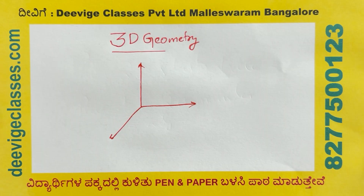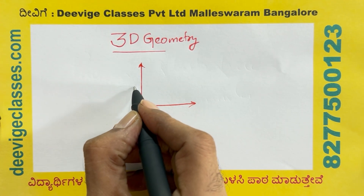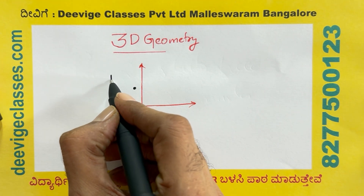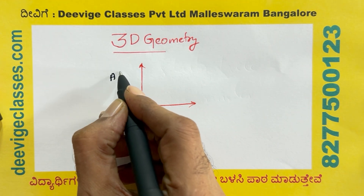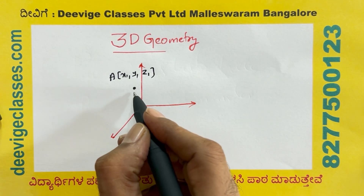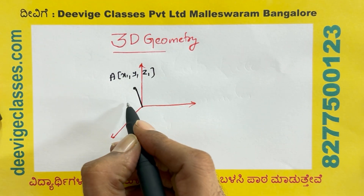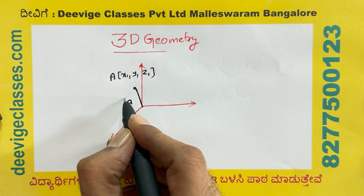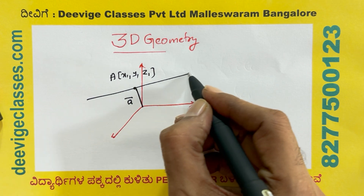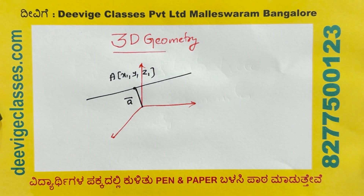Equation of a line passing through a given point parallel to a given vector. Consider any point A of coordinates x1, y1, z1 whose position vector is OA vector, which is equal to vector A. Let L be the line passing through this particular point and parallel to vector B.